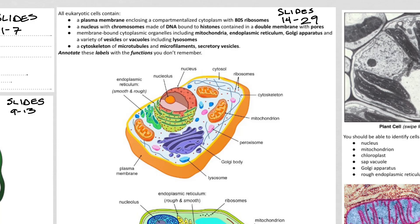Okay, scientists, let's finish up our SL notes about eukaryotic cells. Remember that eukaryotic cells include plants, animals, fungi, and protists. Protists are super fun — if you've ever looked at pond water and seen little things called rotifers, amoeba, paramecium, or clemenonus, they're very neat to look at.